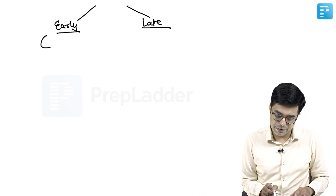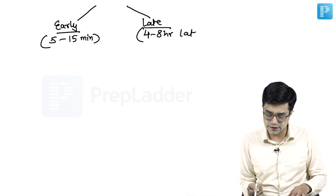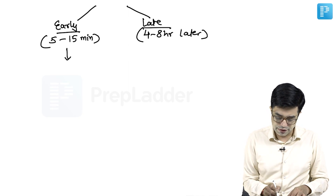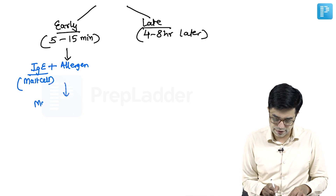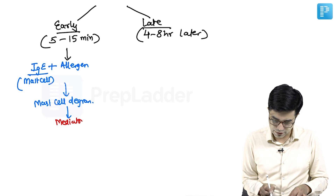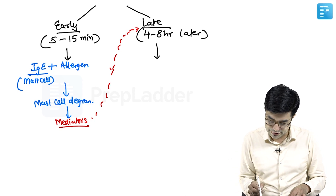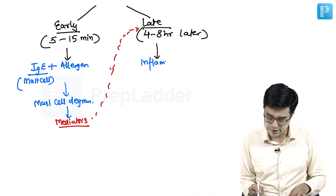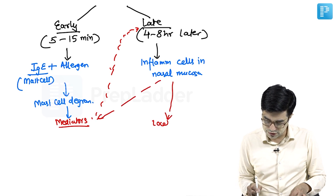Early reaction begins at 5 minutes and is most prominent at 15 minutes — so we give the range 5 to 15 minutes. Late reaction will occur 4 to 8 hours after the early reaction. In the early reaction, IgE combines with the allergen. This IgE present on the mast cell surface causes mast cell degranulation, releasing mediators. These mediators will produce the late reaction, which is characterized by recruitment of inflammatory cells that infiltrate the nasal mucosa and produce even more mediators, leading to local inflammation.